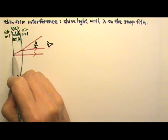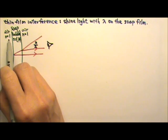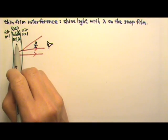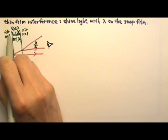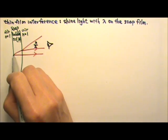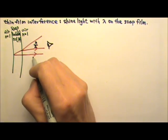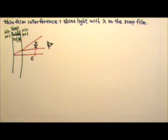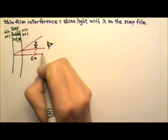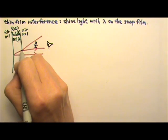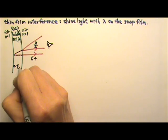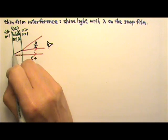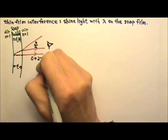For the second reflection, the light goes from N equals 1.34 to N equals 1. It's reflected off a smaller N, so peaks stay peaks — there is no half-wavelength shift. However, this light ray has to travel the extra distance through the film. If the thickness of the thin film is T, then this extra distance would be 2T.